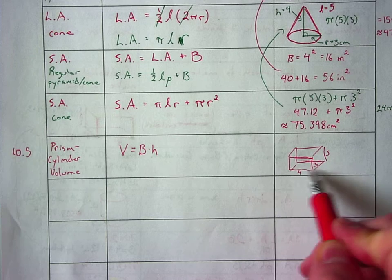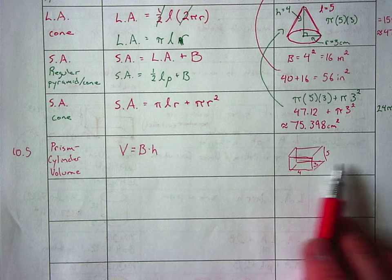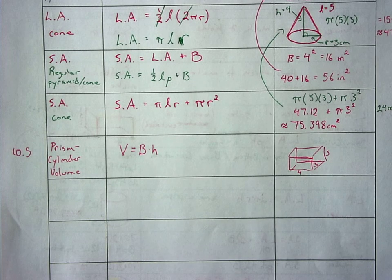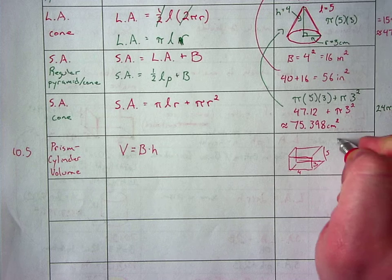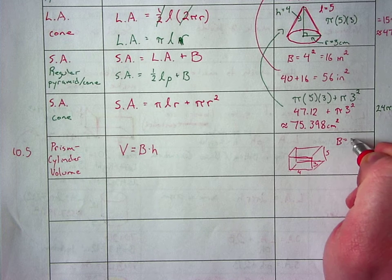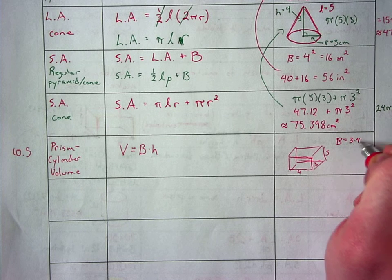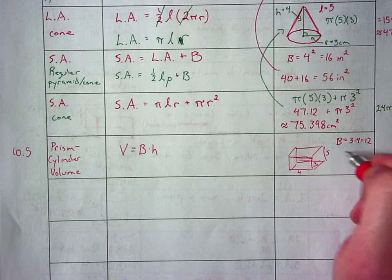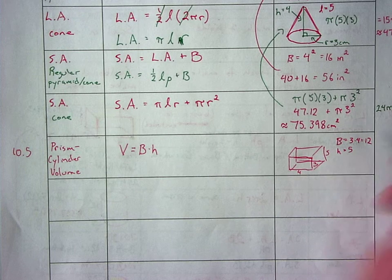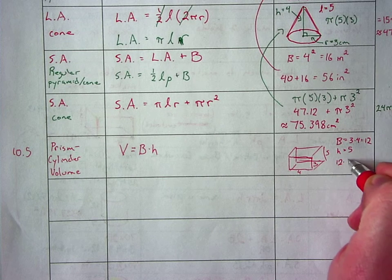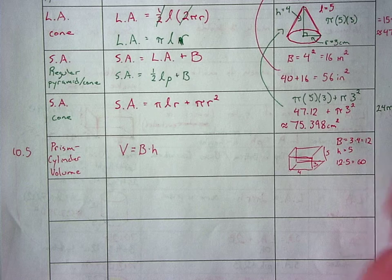You've got 12 blocks on the bottom, then you're going to have 12 blocks on the second layer until you're five high. So the area of the base is three times four is 12, because that's the area of a rectangle. Your height is five. And 12 times five is 60 units.